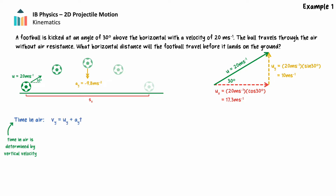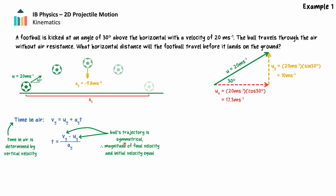Vertically, we can solve for time in the air using the equation: final velocity equals initial velocity plus the product of acceleration and time. We'll use the subscript y to mean any motion in the vertical direction. The projectile's motion is symmetrical, so the final velocity will be the same magnitude as the initial velocity but in the opposite direction. Rearranging and substituting our values tells us the ball is in the air for 2.04 seconds.